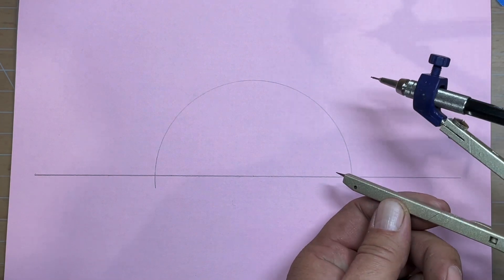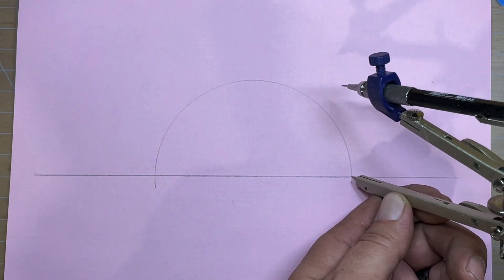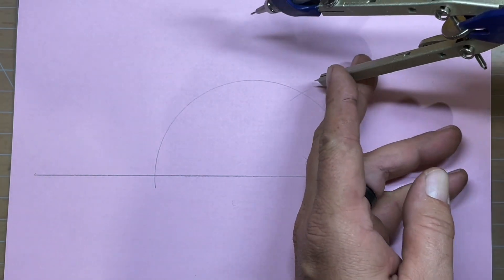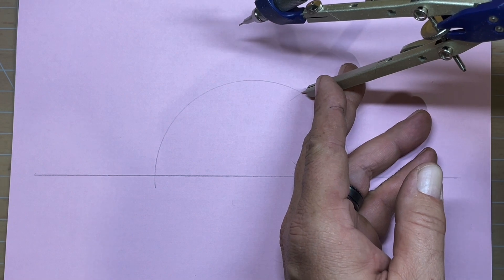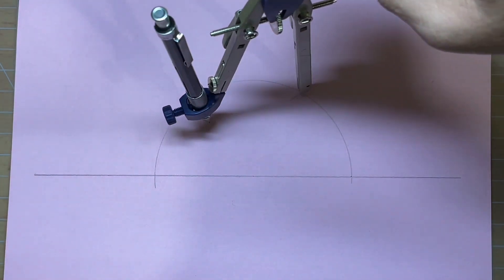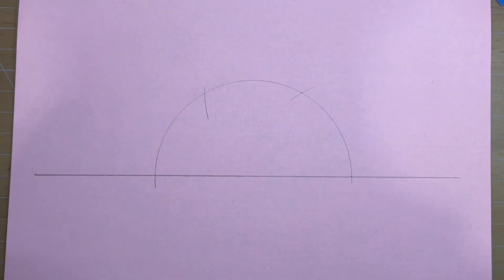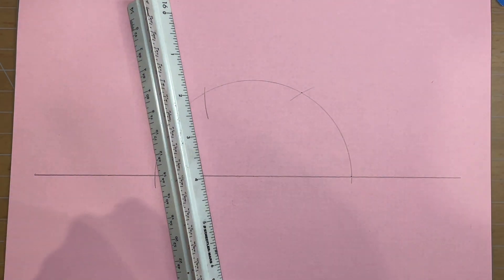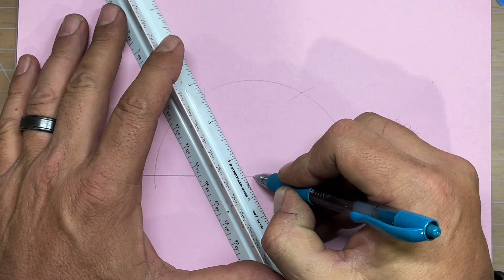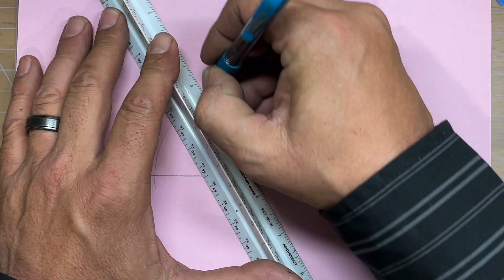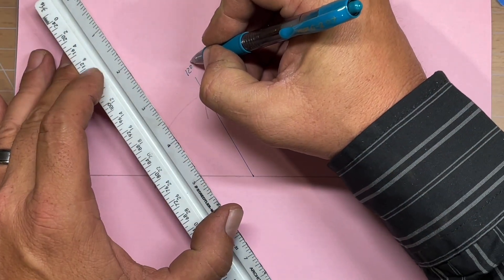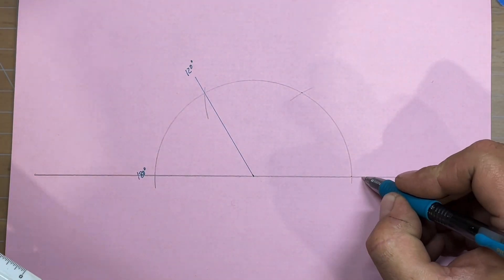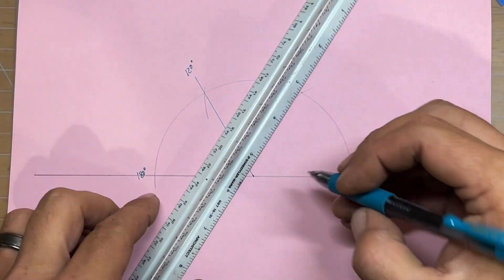Then you'll take your compass without resetting, come to the 0 degree and strike an arc here, and then move it until it's on that point and strike an arc there. Now these are going to pick up our 60 degree and 120 degree. So we'll draw these out. This is 120 degrees, this is 180 degrees, this is 0 degrees, and this one will be 60 degrees.